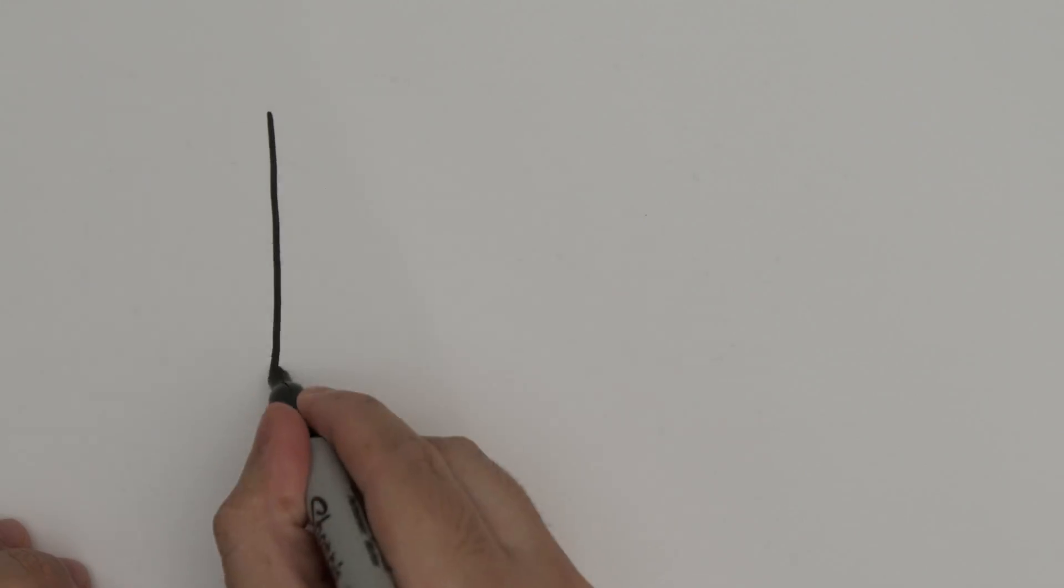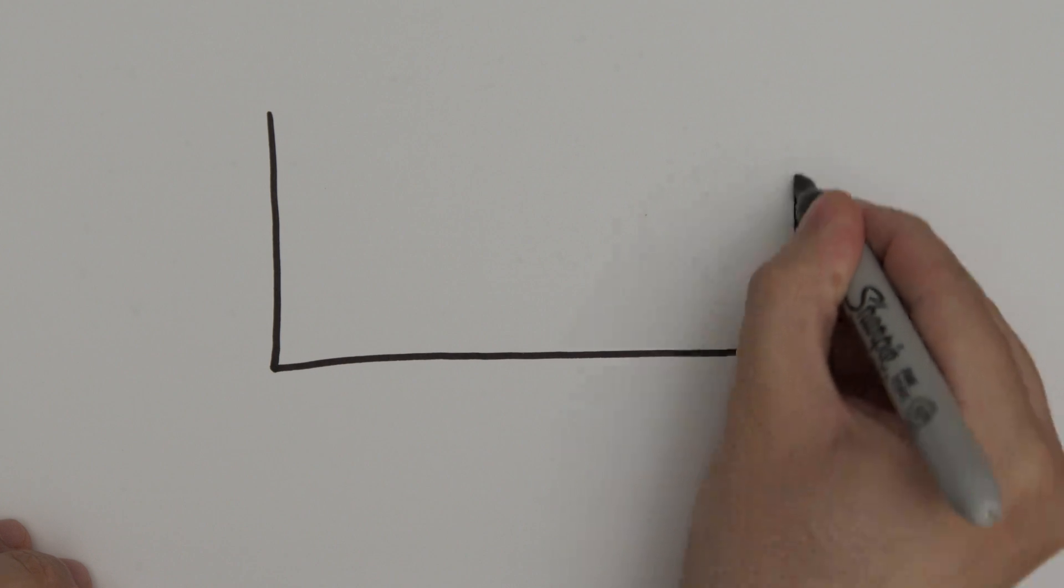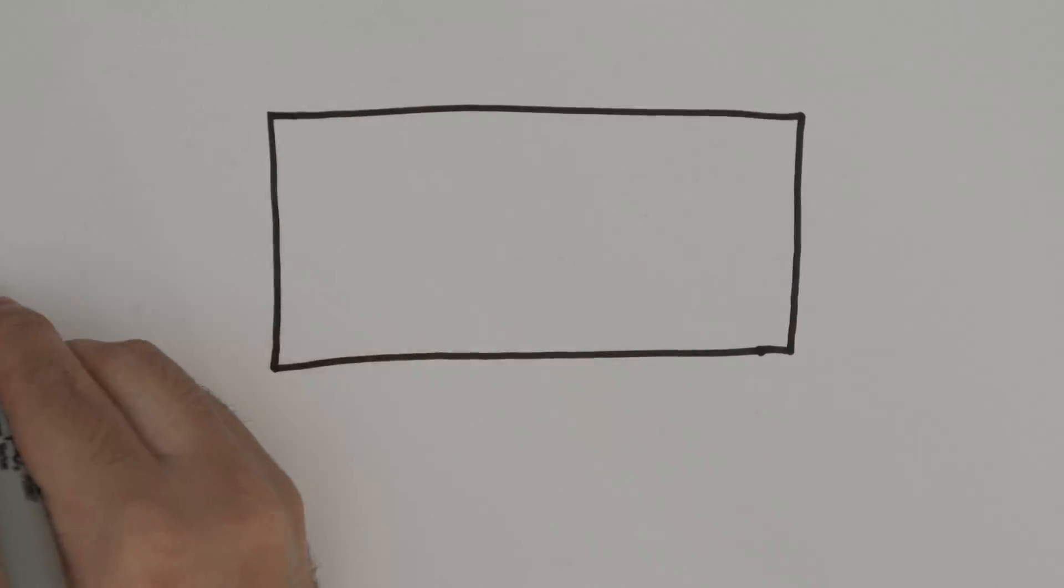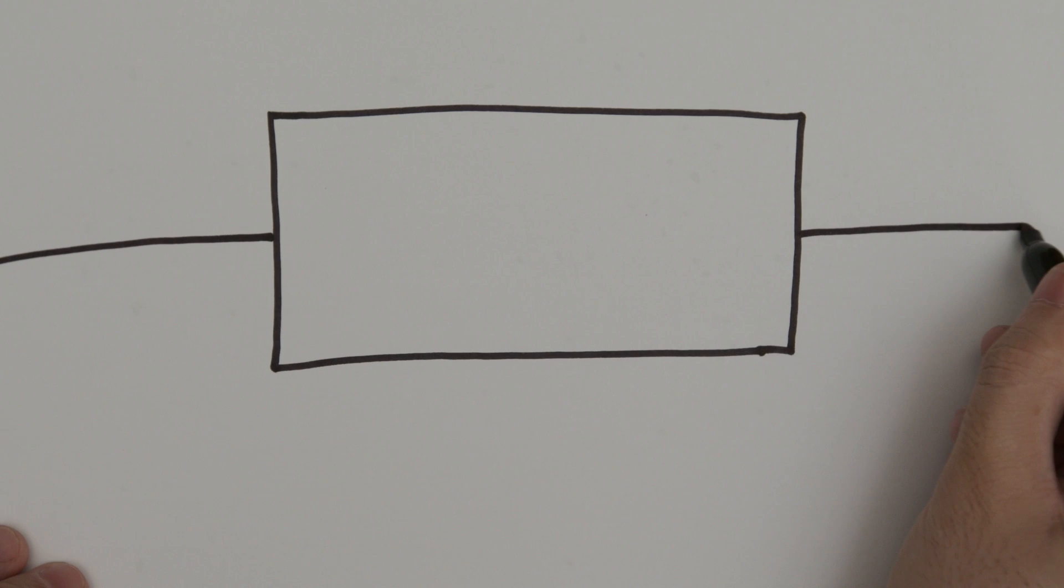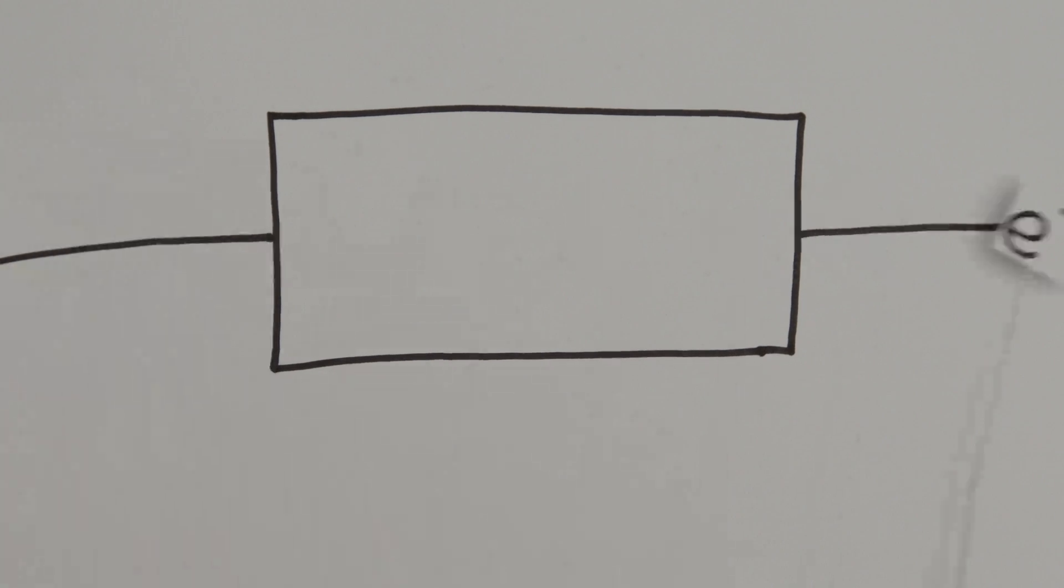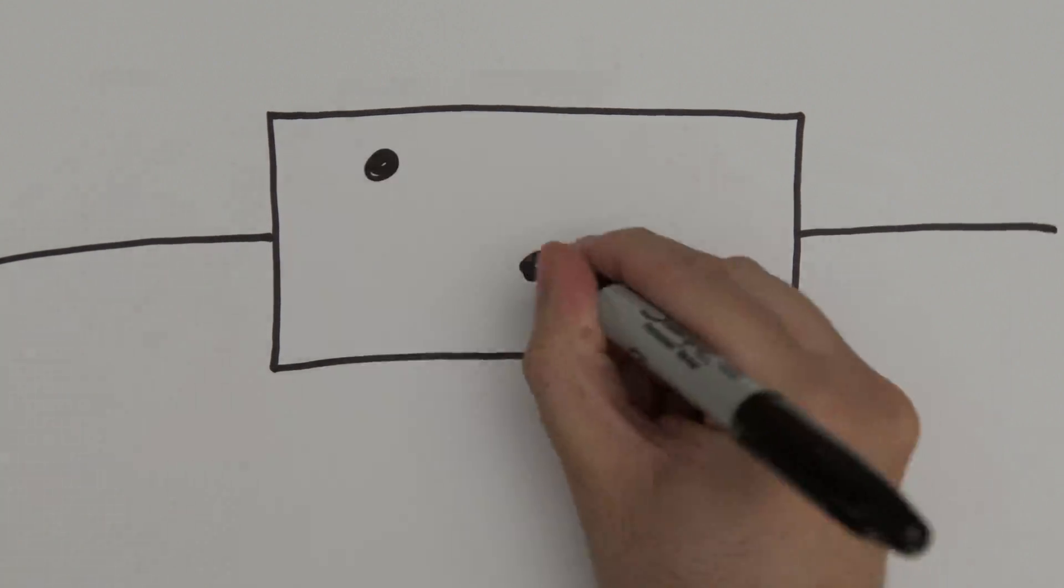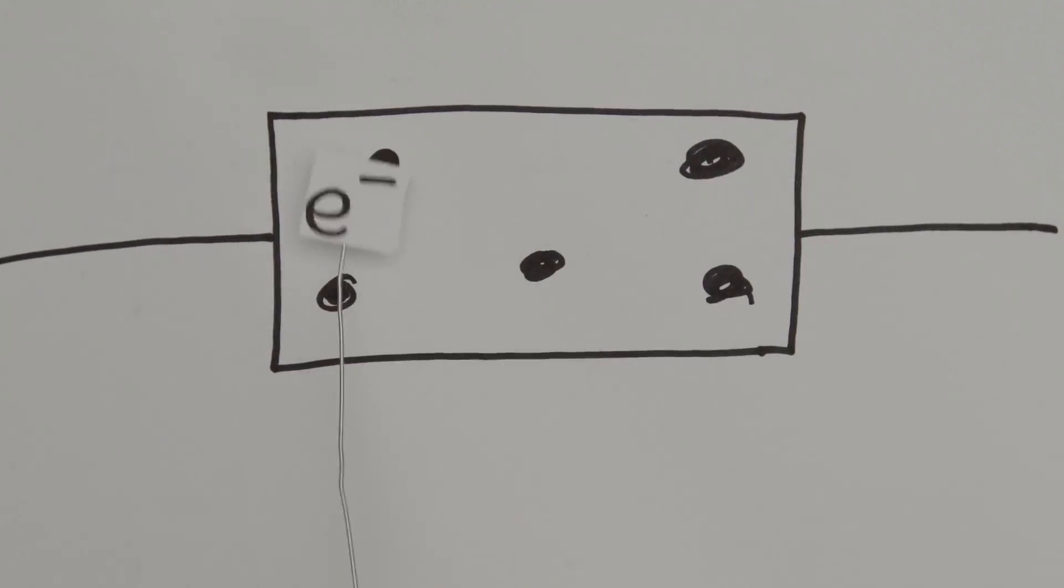Let's zoom way into the resistor and see what's happening. Resistors are made up of materials that have a certain conductivity. The higher the conductivity, the less particles get in the way of the flowing electrons. The less conductive the material, the more electrons bump into particles and get slowed down.